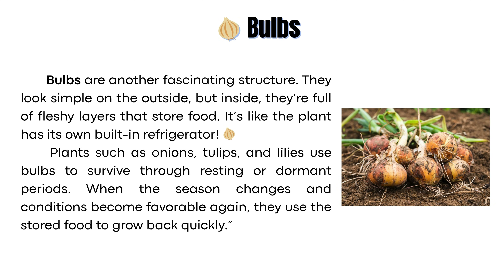Bulbs are another fascinating structure. They look simple on the outside, but inside they're full of fleshy layers that store food. It's like the plant has its own built-in refrigerator. Plants such as onions, tulips, and lilies use bulbs to survive through resting or dormant periods. When the season changes and conditions become favorable again, they use the stored food to grow back quickly.